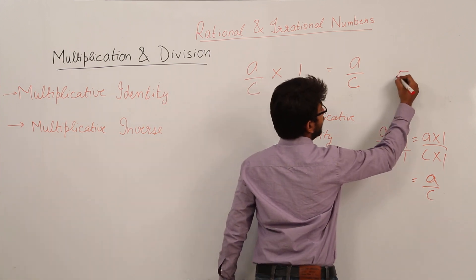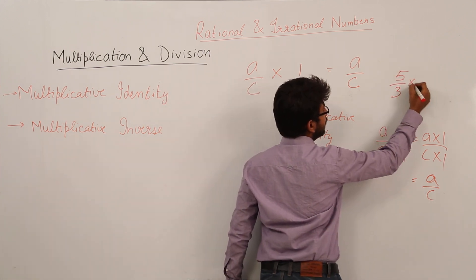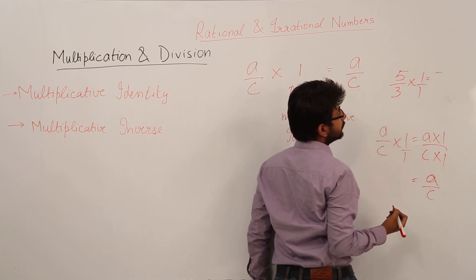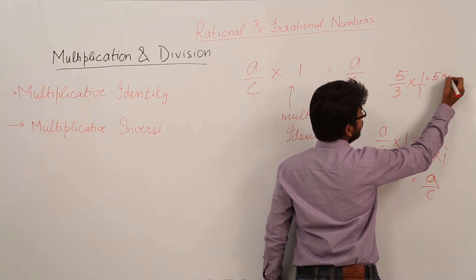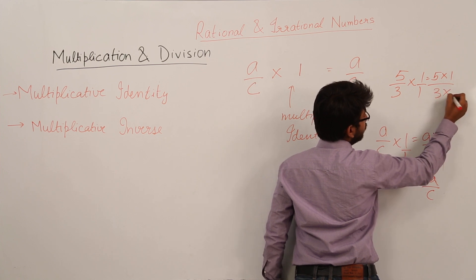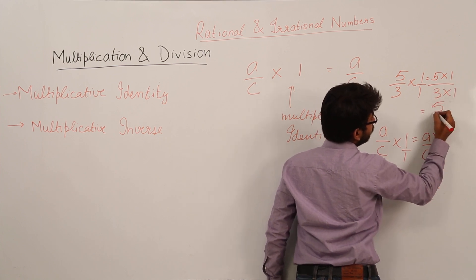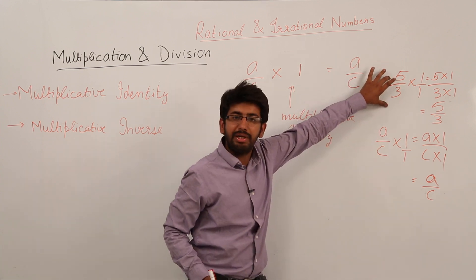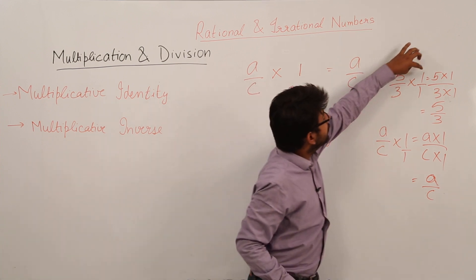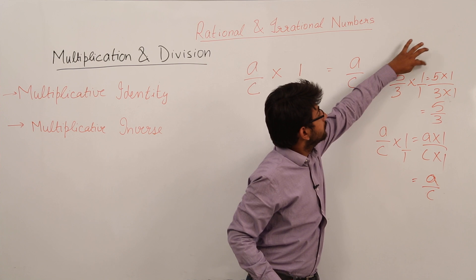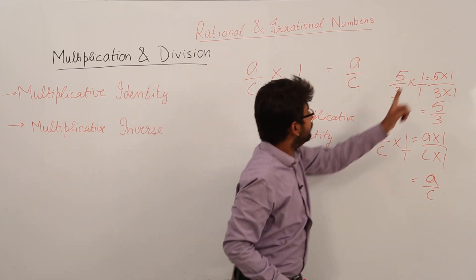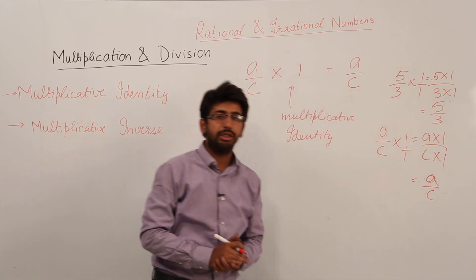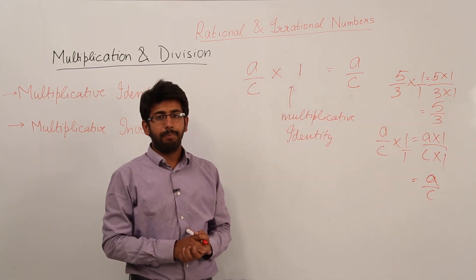For example, 5/3 multiplied by 1: we write 1 as 1/1, giving us 5 × 1 divided by 3 × 1, which equals 5/3. So I multiplied the rational number 5/3 with the multiplicative identity 1 and got the very same rational number 5/3 as the answer.